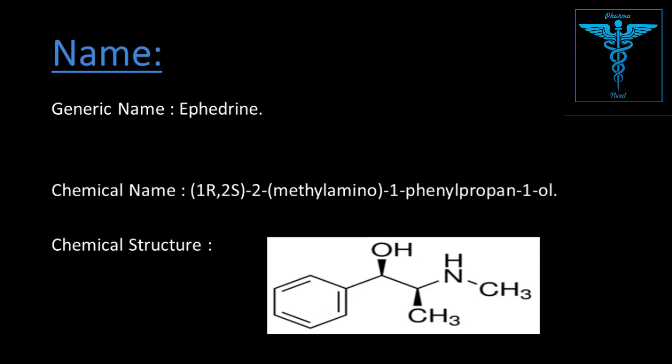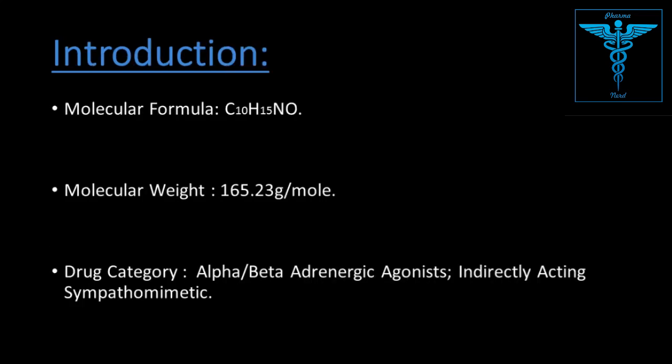This is the chemical structure of ephedrine. Molecular formula: C10H15NO. Molecular weight: 165.23 g/mol. Drug category: alpha-beta adrenergic agonist and indirectly acting sympathomimetic.